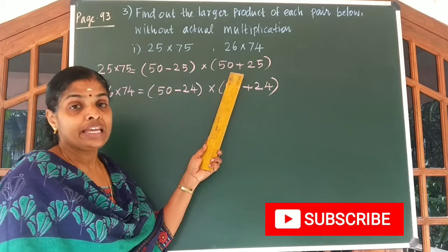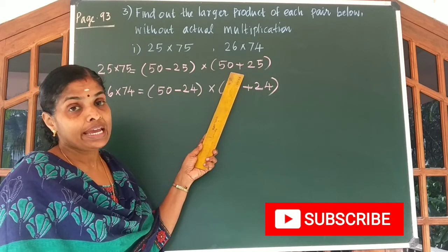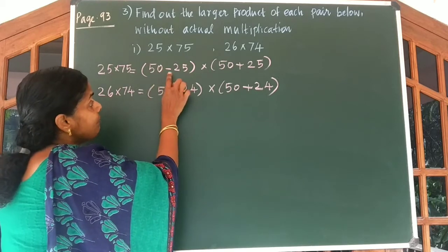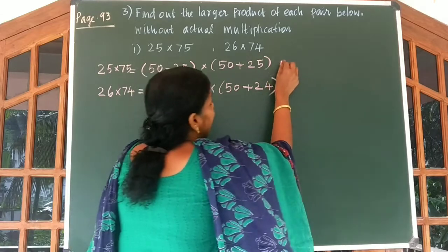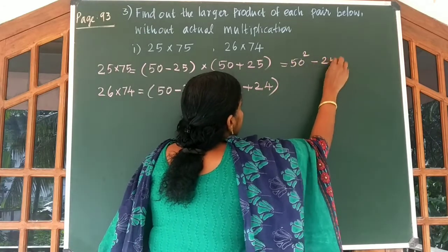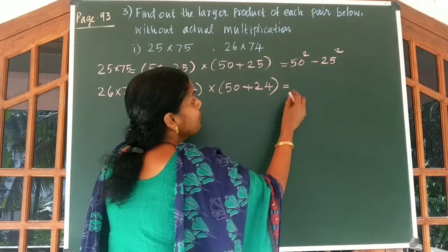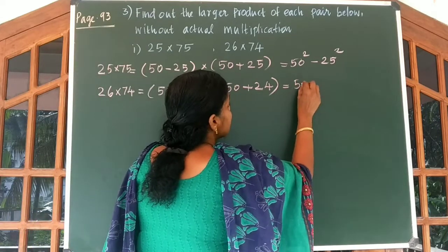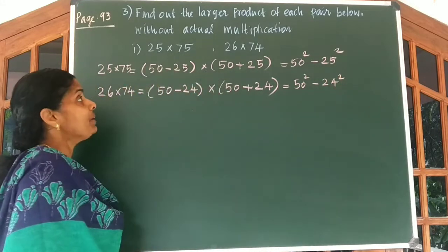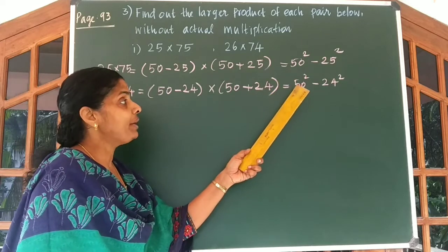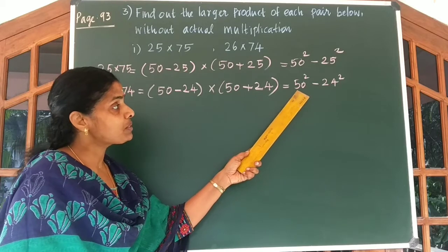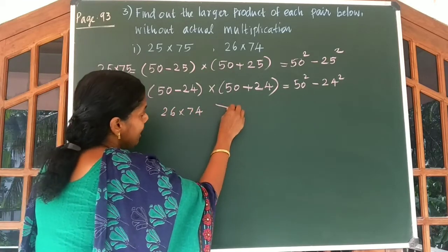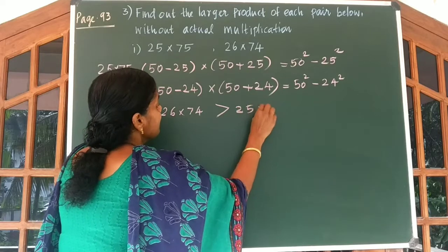We have studied the identity (A minus B) into (A plus B) is equal to A square minus B square. So the answer for the first one: we can write 50 minus 25 into 50 plus 25 as 50 square minus 25 square, and 26 into 74 as 50 square minus 24 square. We can easily find out that 50 square minus 24 square is greater, so 26 into 74 is larger than 25 into 75.